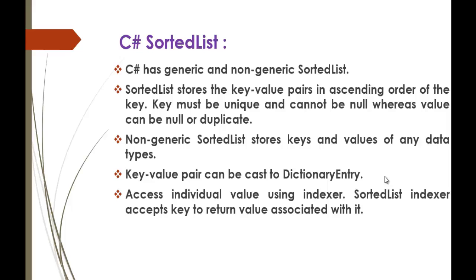The non-generic sorted list stores key-value pairs in ascending order of the key. If you want to store items in the sorted list, you have to make use of key and value pairs. The key must be unique and cannot be null, whereas the value can be null or duplicate.